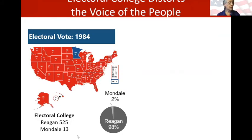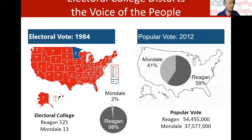Why do election results have to look this way? Remember Reagan versus Mondale in 1984 — the most lopsided Electoral College victory in modern history, 98% of electors versus 2%? But more than 37 million people voted for Mondale — 41% of voters. That's not trivial. Yet the Electoral College simply erases that diversity of opinion. Almost all of those 'blue' votes are utterly forgotten. Where did all those Mondale voters go? All we can see is 525 to 13 — the Electoral College outcome.